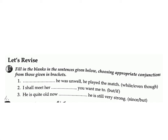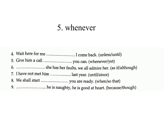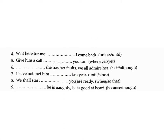Let's revise. Exercise E: Fill in the blanks in the sentences given below choosing appropriate conjunctions from those given in brackets. One: '— he was unwell, he played the match.' (while / even though) Answer: even though. Two: 'I shall meet her — you want me to.' (but / if) Answer: if. Three: 'He is quite old now — he is still very strong.' (since / but) Answer: but. Four: 'Wait here for me — I come back.' (unless / until) Answer: until. Five: 'Give him a call — you can.' (whenever / yet) Answer: whenever.